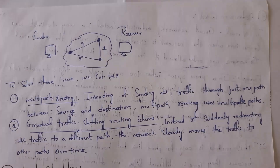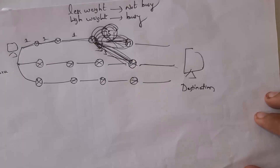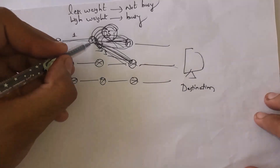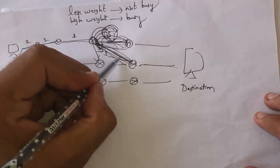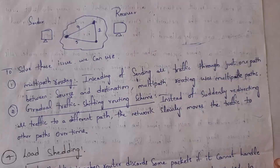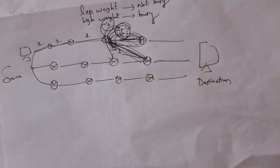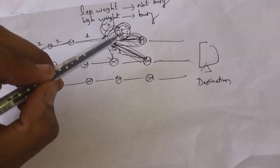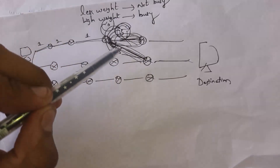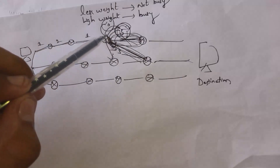This problem can be solved using two techniques: multi-path routing and gradual traffic shifting routing scheme. In multi-path routing, instead of shifting all traffic to one other route, each device selects multiple paths — some devices use one path, some use another. In the gradual traffic shifting routing scheme, instead of shifting all traffic to another route suddenly, traffic is shifted gradually. For example, instead of all 10 devices moving at once, first some devices move, then more devices move, and so on, so data reaches the receiver faster.